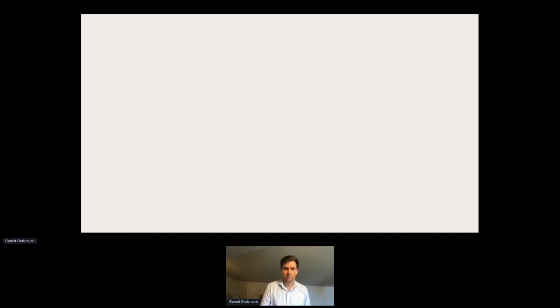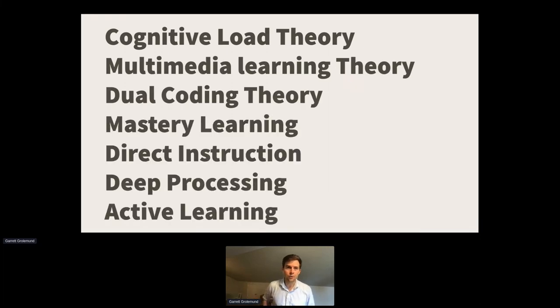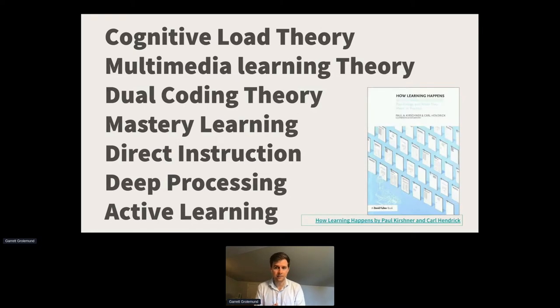If any of you are looking into training, there's this resource called How Learning Happens by Paul Kirsten and Paul Hendrick - a very concise summary of all the most important things from cognitive science that you can use to make better training. That's what I did. I took these things, applied them to the workshop format, iterated on each workshop I was teaching, and I was very successful.